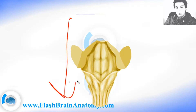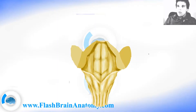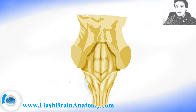Now I will continue with the brainstem. That was the second part — the pons. So we had the medulla oblongata, now we have the pons, and the third part of the brainstem is the mesencephalon.